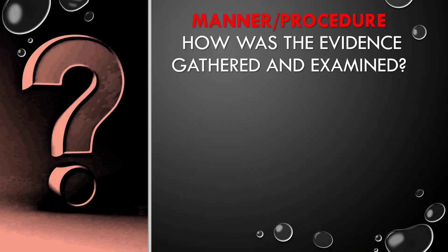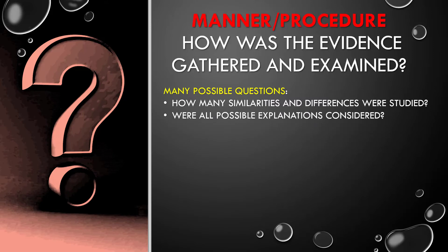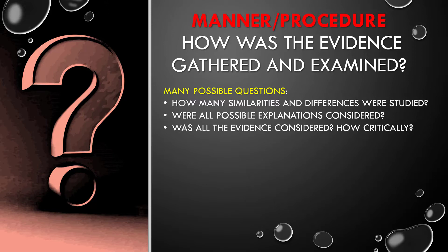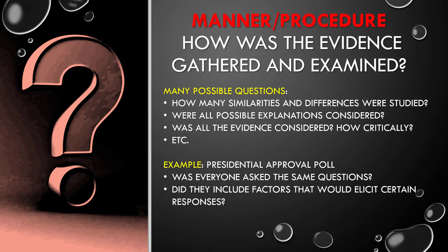Turning to the question of manner and procedure, we want to know how was the evidence gathered and how was it examined. This raises many possible questions regarding methods of evaluation: How many similarities and differences are studied? Were all possible explanations considered? Was all the evidence taken into consideration critically? Was there a control group in an experimental study? With our presidential approval rating scenario, was everybody asked the same question? Did the questions include factors that would elicit certain responses based on gender, race, or ethnicity? And were all responses counted equally?